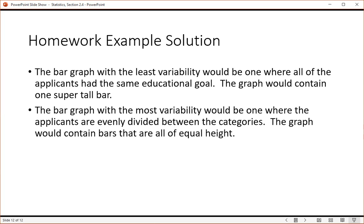The bar graph with the most variability would be one where the applicants are evenly divided between all the categories. So that means all the bars are the same height. So if all the bars are the same height, then that implies that there is a lot of diversity or a lot of variability in the underlying distribution.